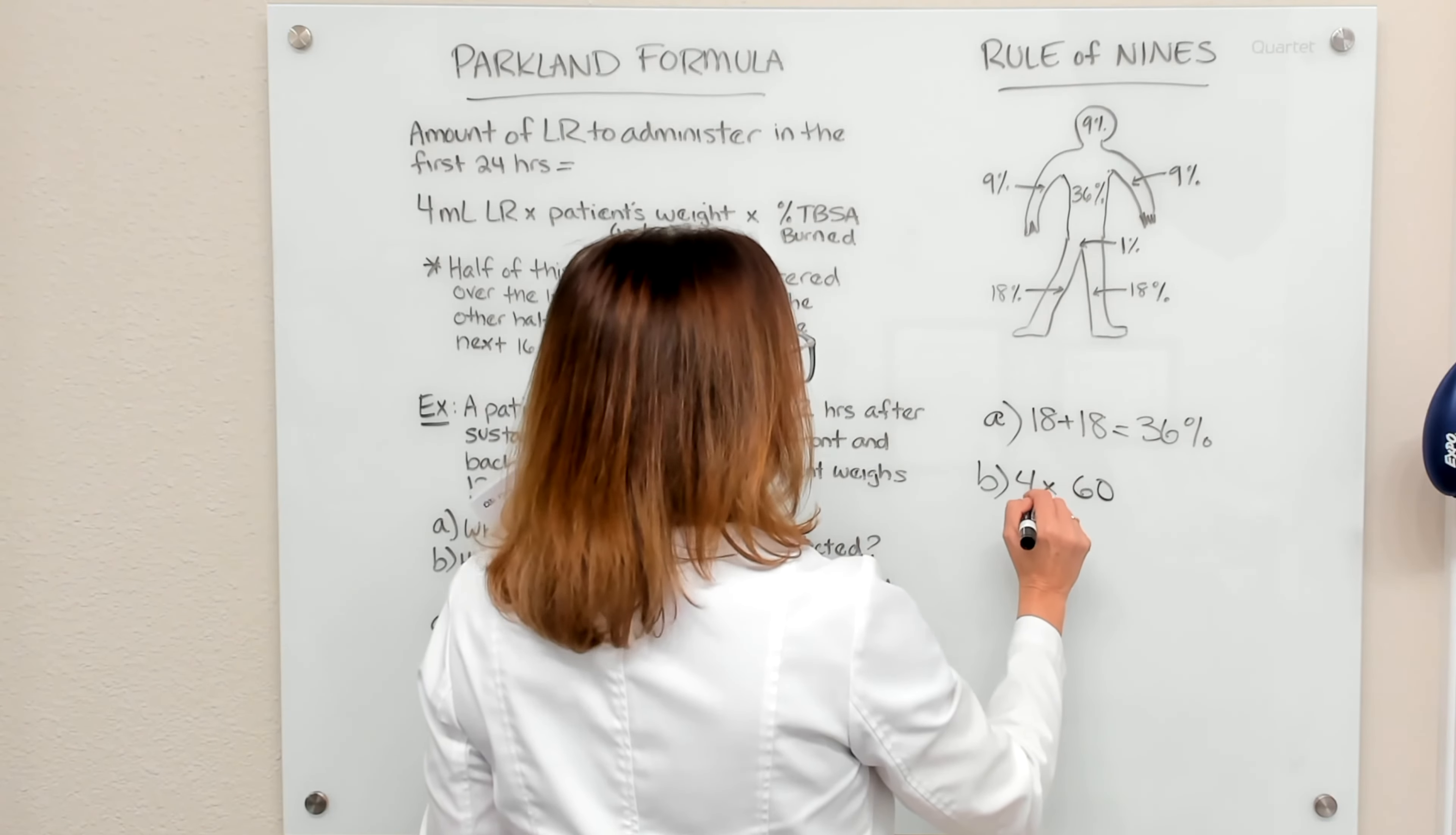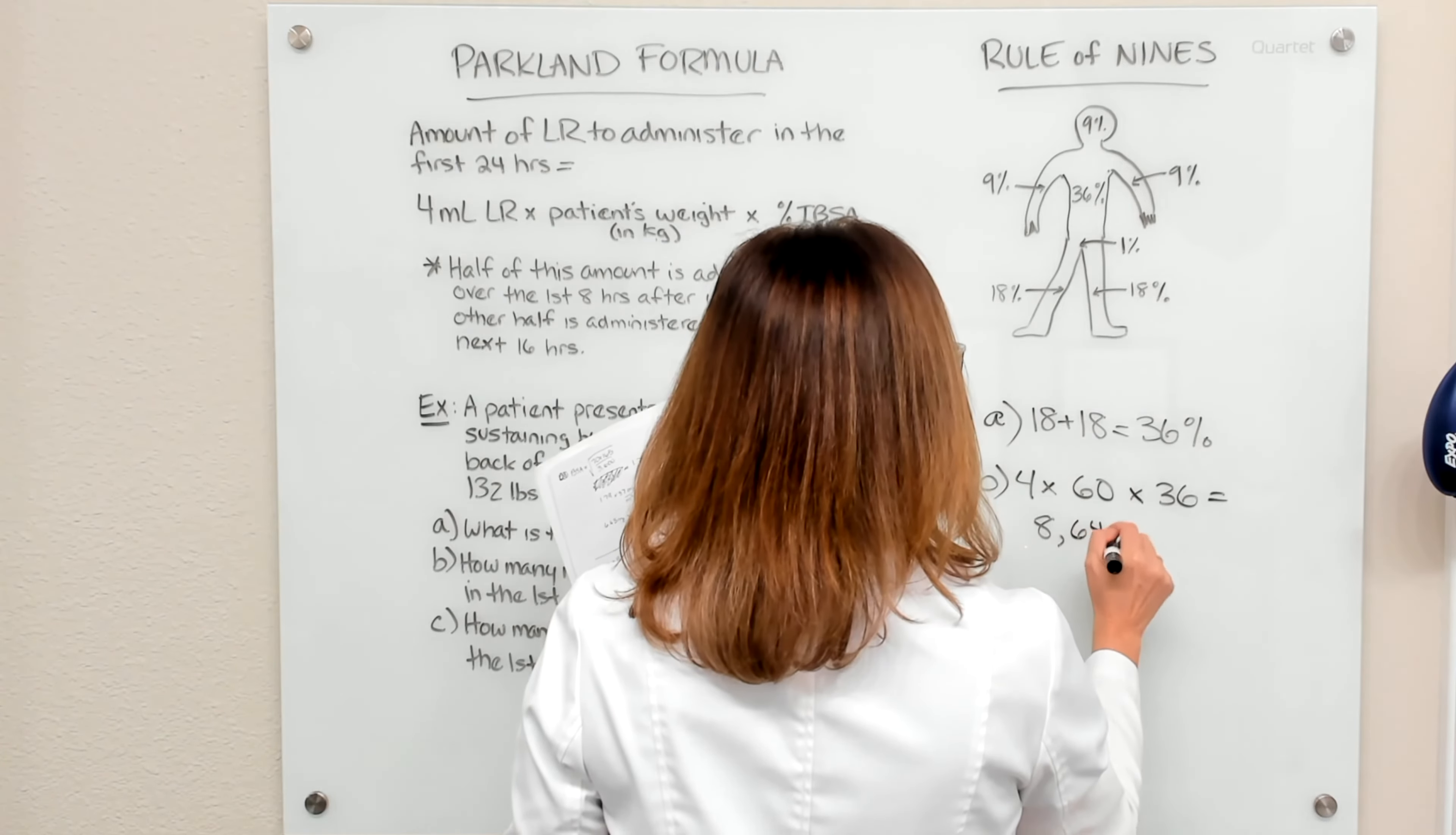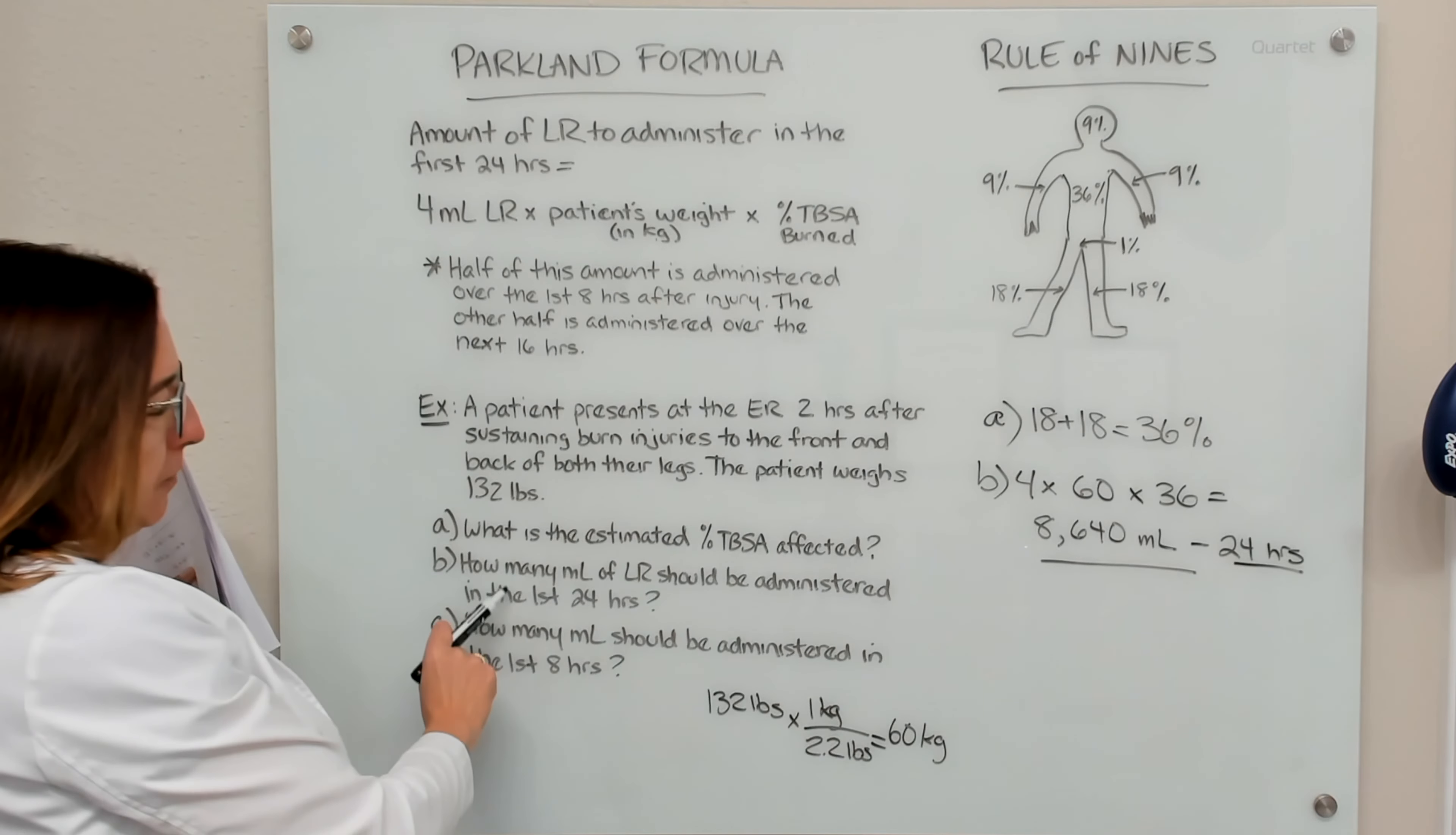So that is what we would plug into our equation over here. We have 4 times 60 times the TBSA percentage, which is 36. So if we calculate this out, we end up with 8,640 milliliters that needs to be administered in the first 24 hours. And that is the answer to part B.